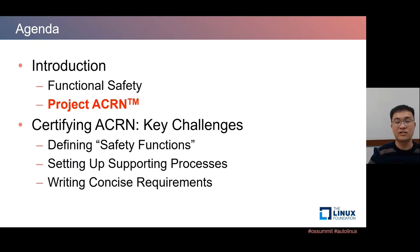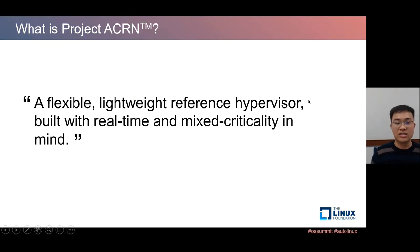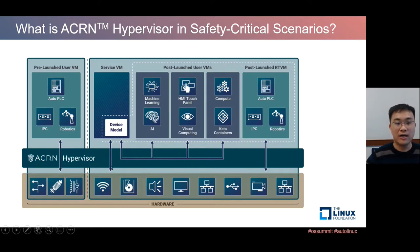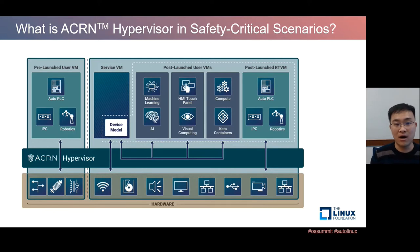Now a brief introduction to ACORN itself. ACORN is a Linux Foundation project implementing a flexible and lightweight reference hypervisor, built mainly for real-time and mixed criticality scenarios. ACORN has a type-1 hypervisor — meaning it runs on bare metal directly. One of its key capabilities is to partition the hardware into multiple parts, where a separate VM can own its own hardware resources like processors, memory, and devices.